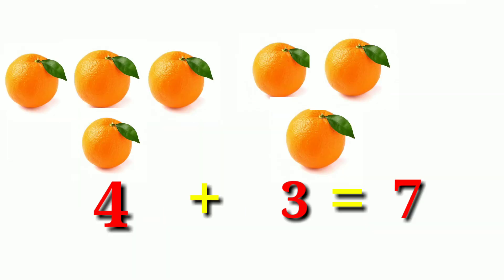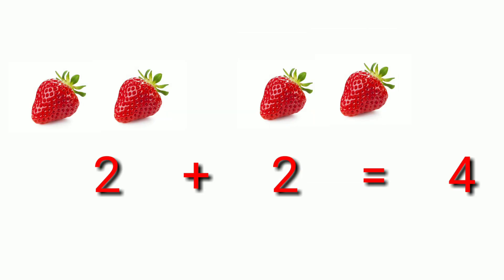We have four oranges and three oranges. By adding them, we have seven oranges. Two strawberries plus two strawberries is equal to four strawberries.